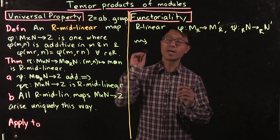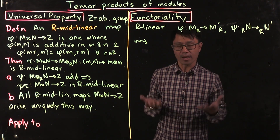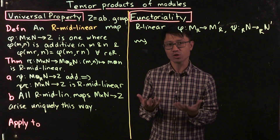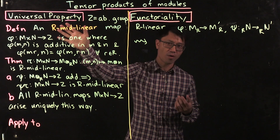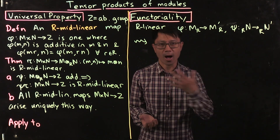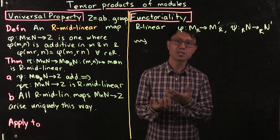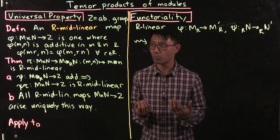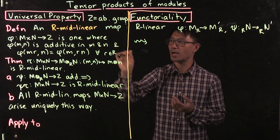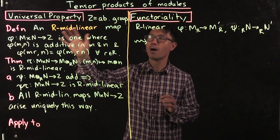I next want to tell you about the many nice properties that tensor products of modules have and the way they mimic the properties of tensor products of vector spaces. The first one, which allows you to prove many facts about tensor products, is the universal property. The universal property for vector spaces involves bilinear maps — it tells you that bilinear maps coming out of a product of vector spaces correspond to linear maps coming out of the tensor product.